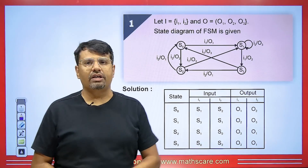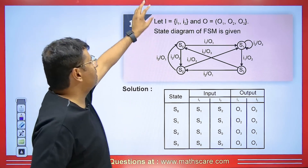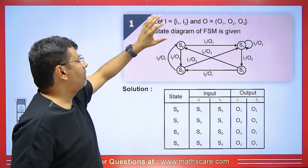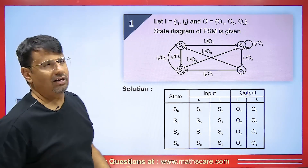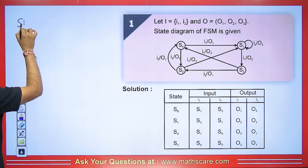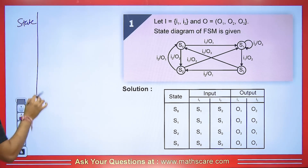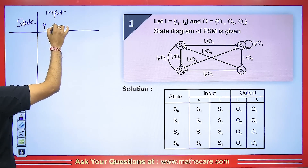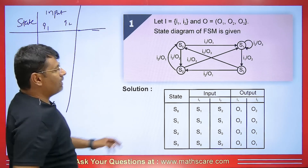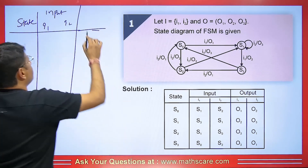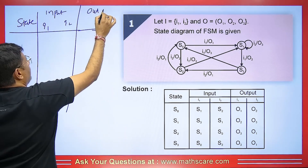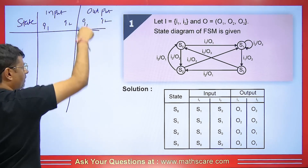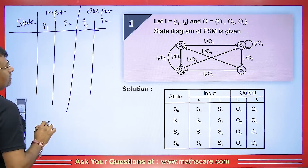Let us try to understand a question. The inputs given are I1 and I2, and three outputs are O1, O2, and O3. From this diagram, we have to make a table. First we write the state column, then since there are two inputs, we write input I1 and input I2. The output here will come corresponding to each input — O1, O2, O3 corresponding to I1 and I2.